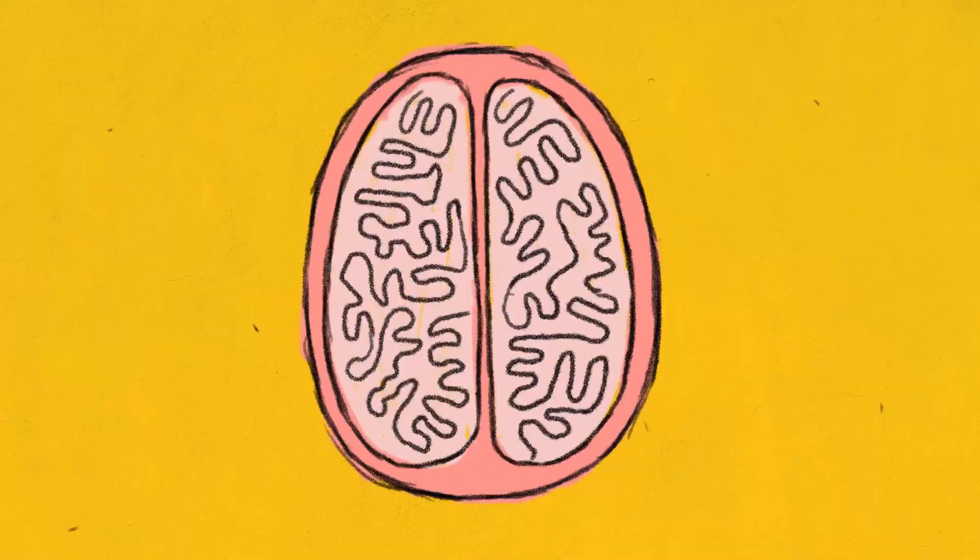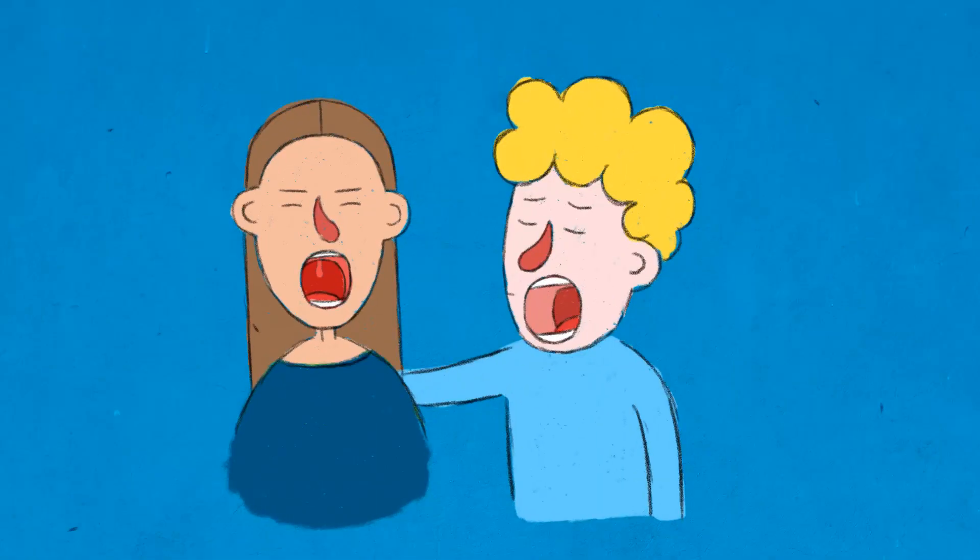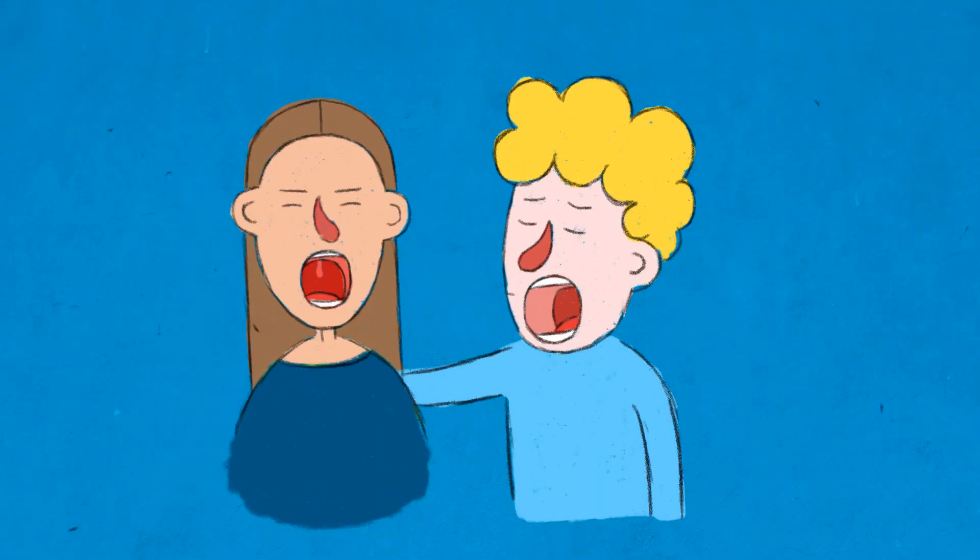The brain's mirror neuron system is one of empathy. When someone else yawns, we may just be yawning along with them to cue social compassion.